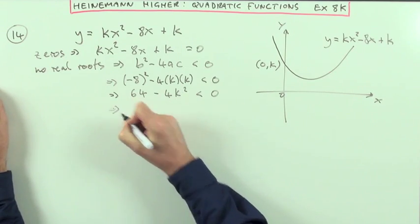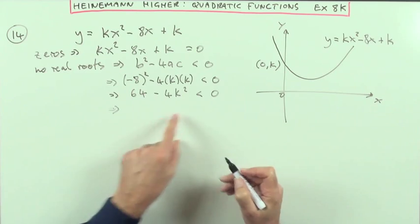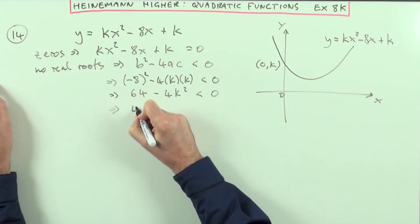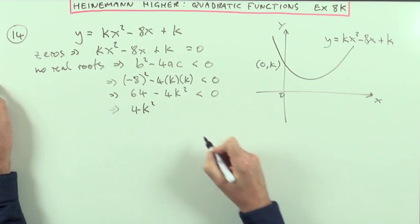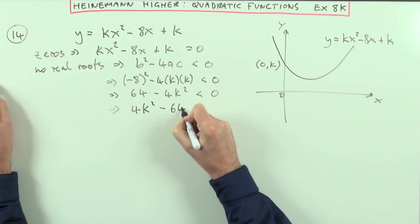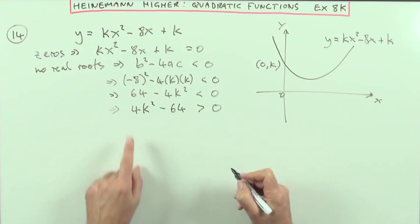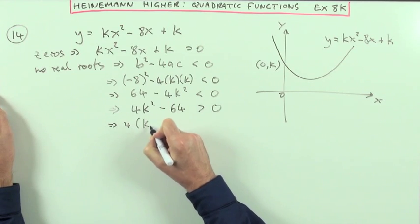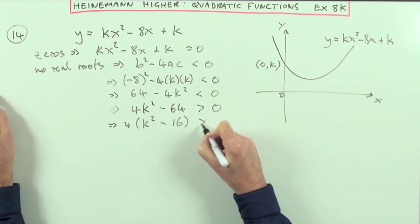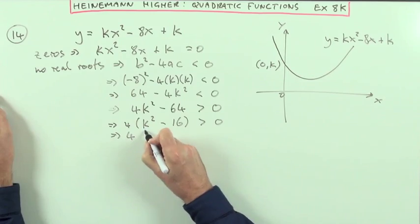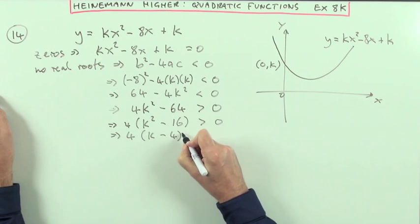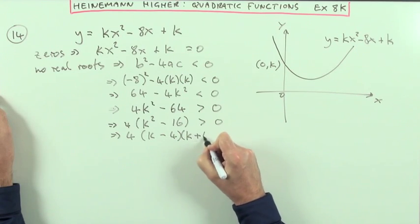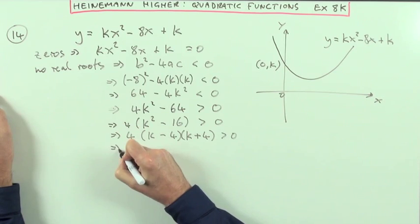Keep everything on one side. What I will do here, though, is I think I'll flip my signs over to make that friendlier looking. So I'll make that positive 4k squared minus 64 greater than zero. So that's the actual equation I'm going to work with. I'll take that 4 out of it: k squared minus 16, still greater than zero. Factorize it, difference of two squares. So k minus 4 and k plus 4 greater than zero.